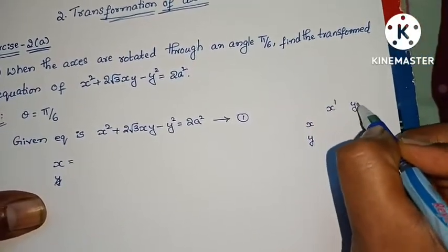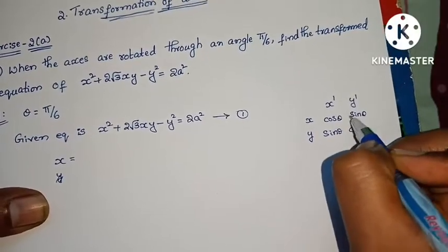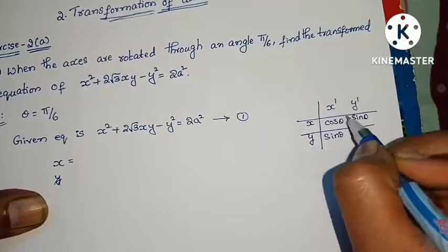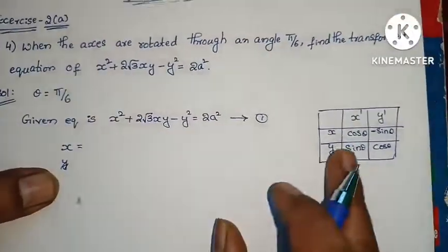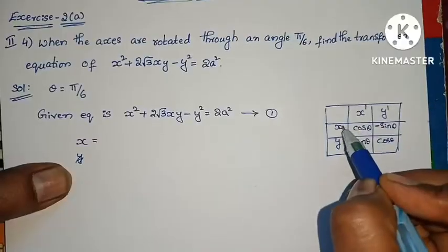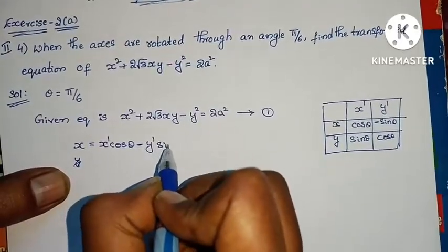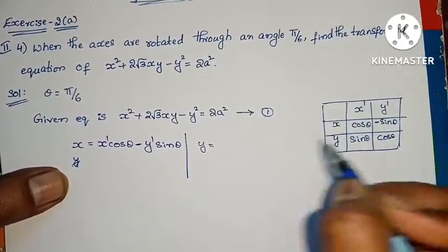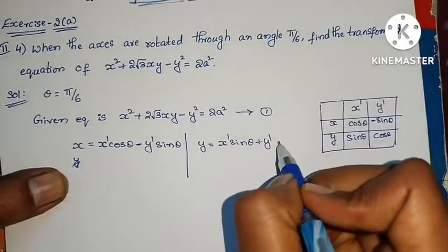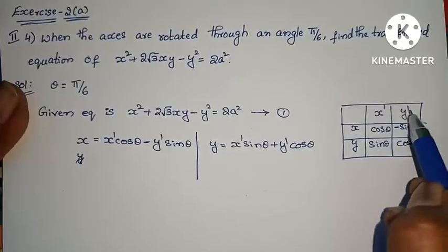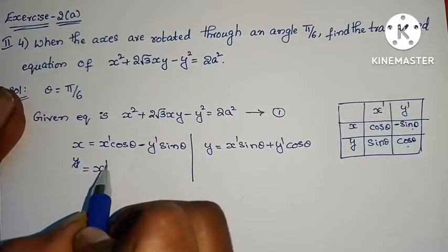For rotation of axes, we write the table: x, y, x dash, y dash. Here cos theta, cos theta, sin theta, sin theta — with a minus sign on one of the sin theta terms. So: x equals x dash cos theta minus y dash sin theta, and y equals x dash sin theta plus y dash cos theta.